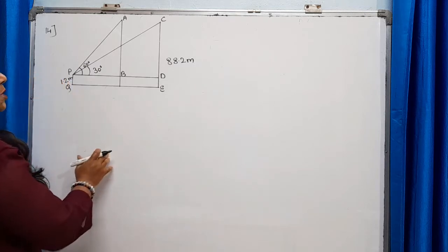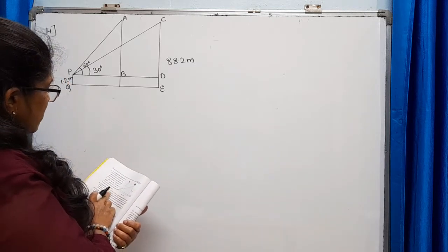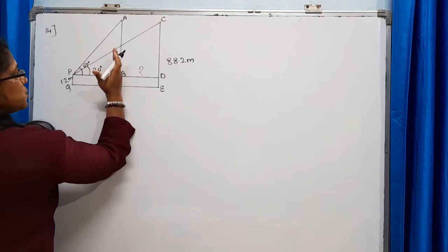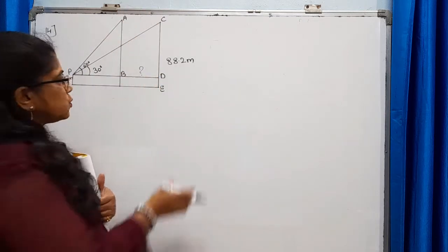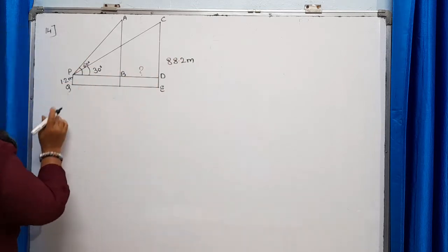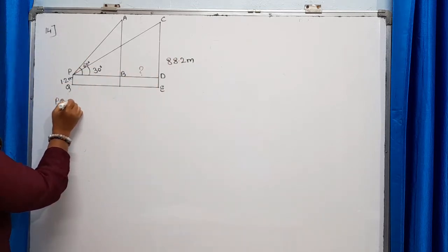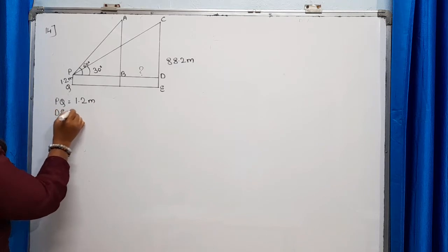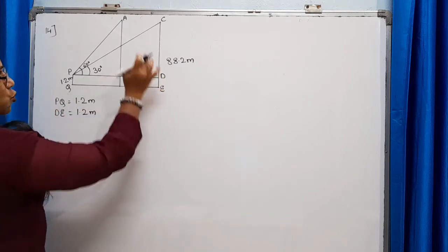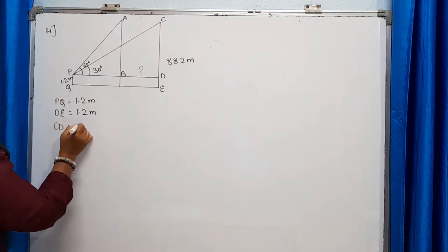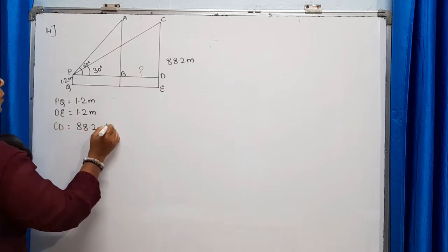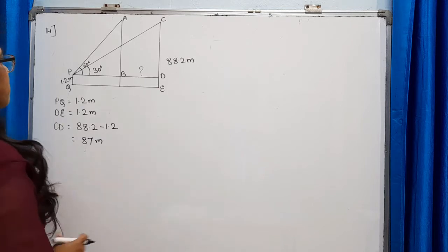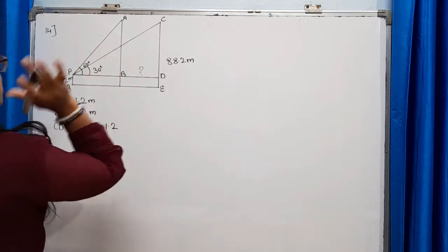Using the figure, we have to find the distance BD — the distance traveled by the balloon from position AB to position CD. Here PQ, the height of the girl, is 1.2 meters, so DE is also 1.2 meters. Therefore CD equals 88.2 minus 1.2, which is 87 meters.